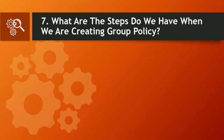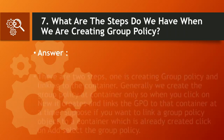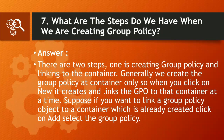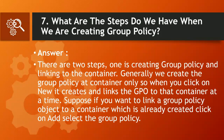Question 7: What are the steps when we are creating group policy? Answer: There are two steps — creating the group policy and linking it to the container. Generally we create the group policy at the container only, so when you click New it creates and links the GPO to that container at the same time. If you want to link a GPO that is already created, click Add and select the group policy.